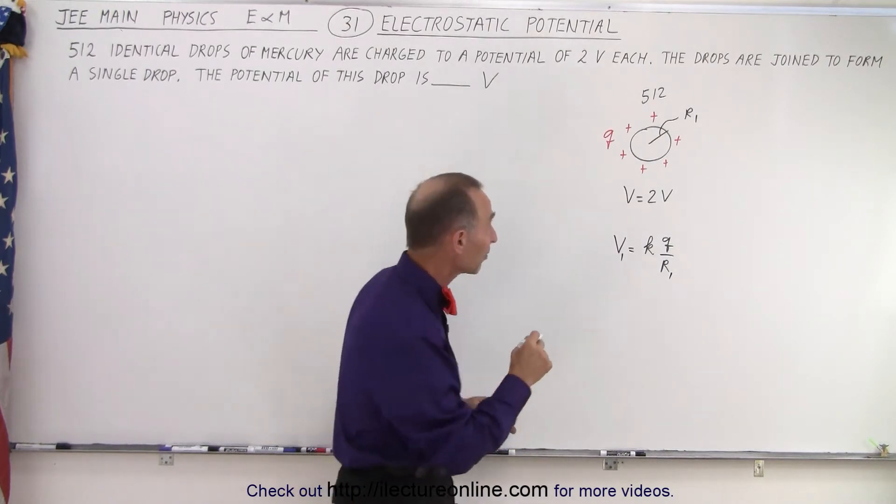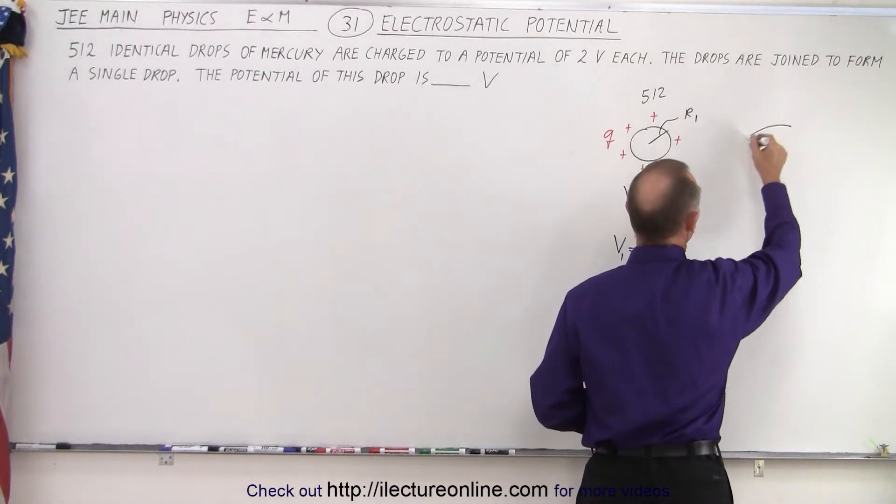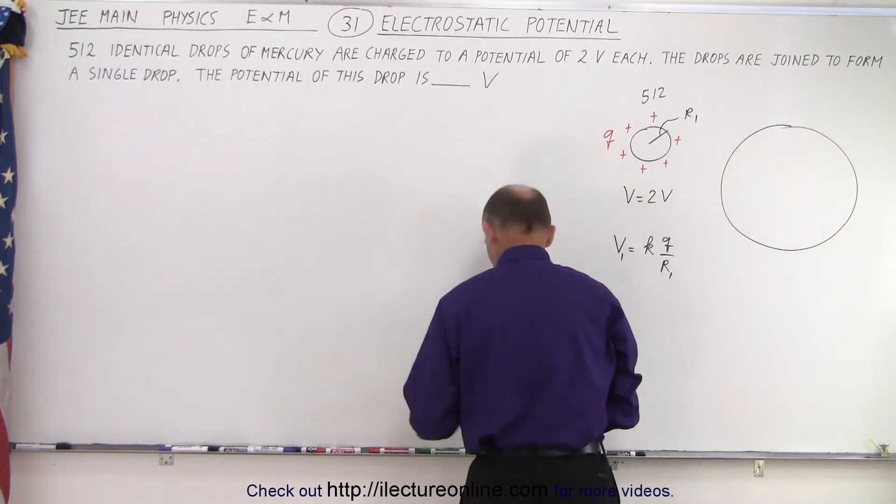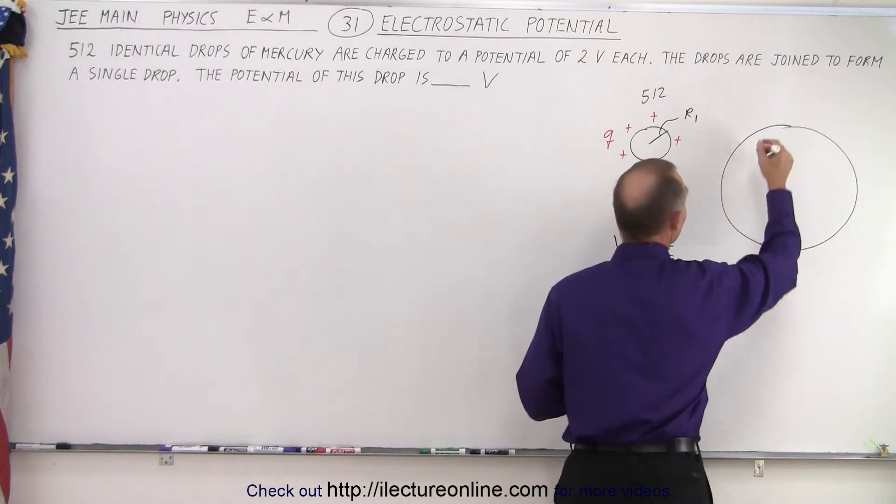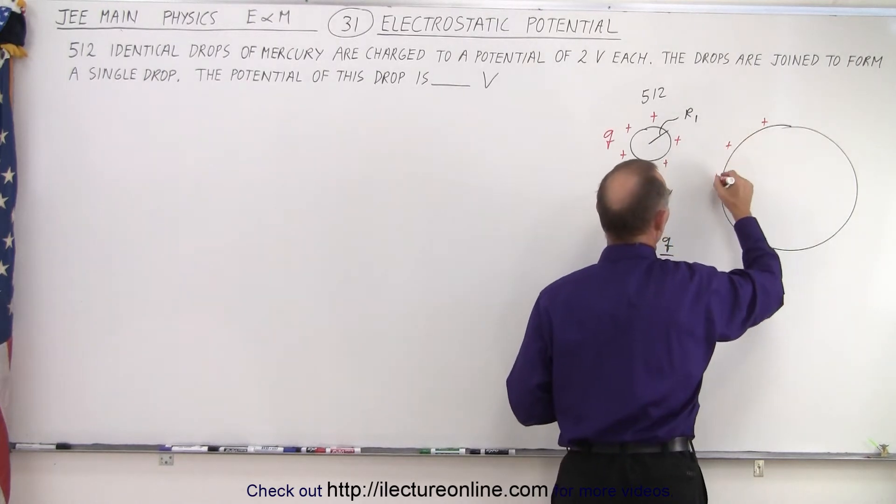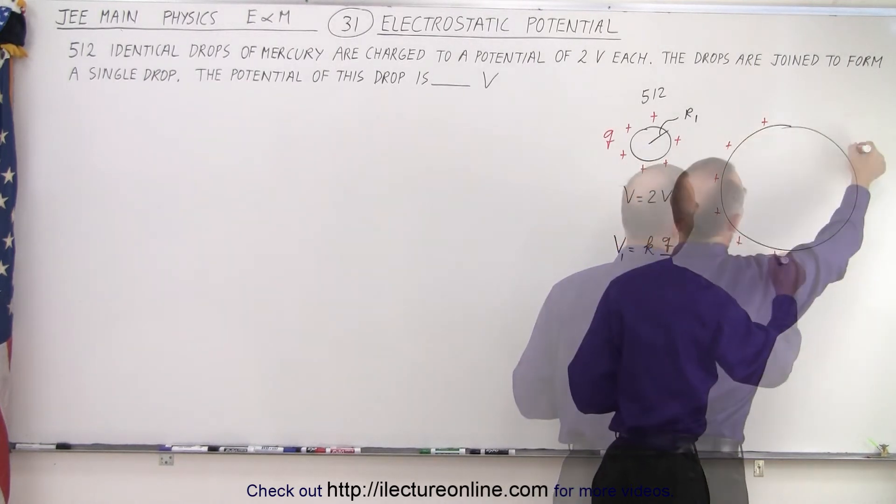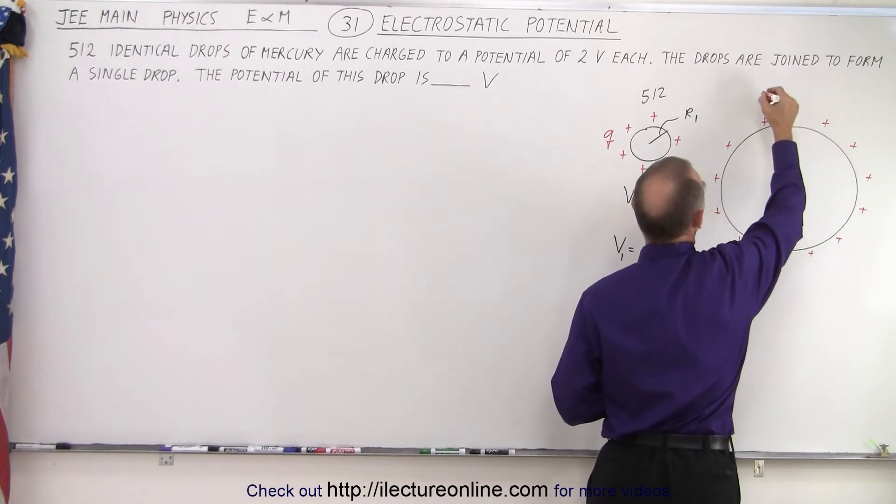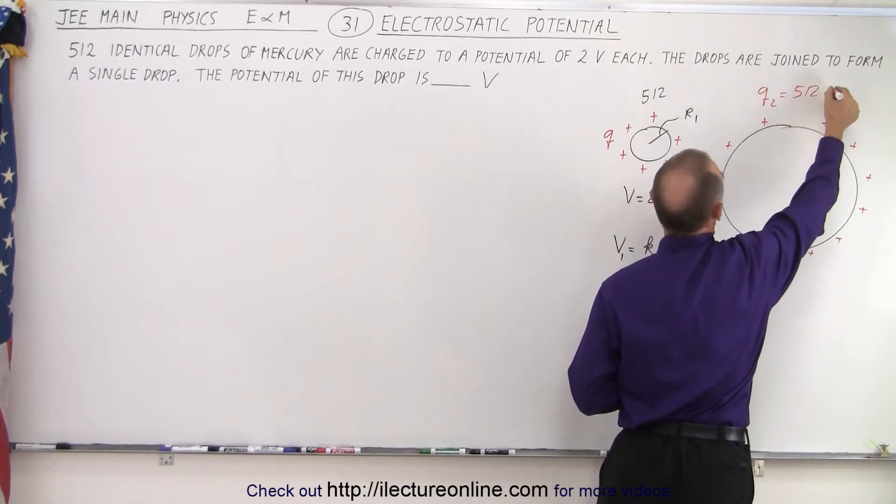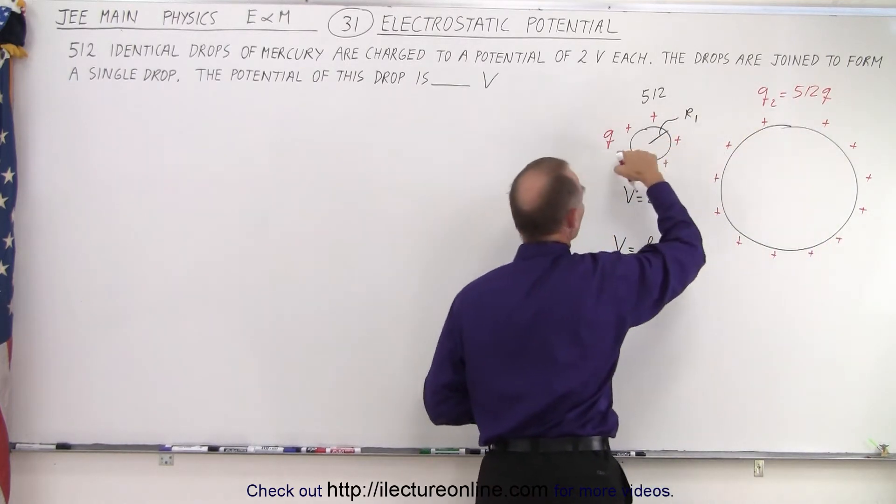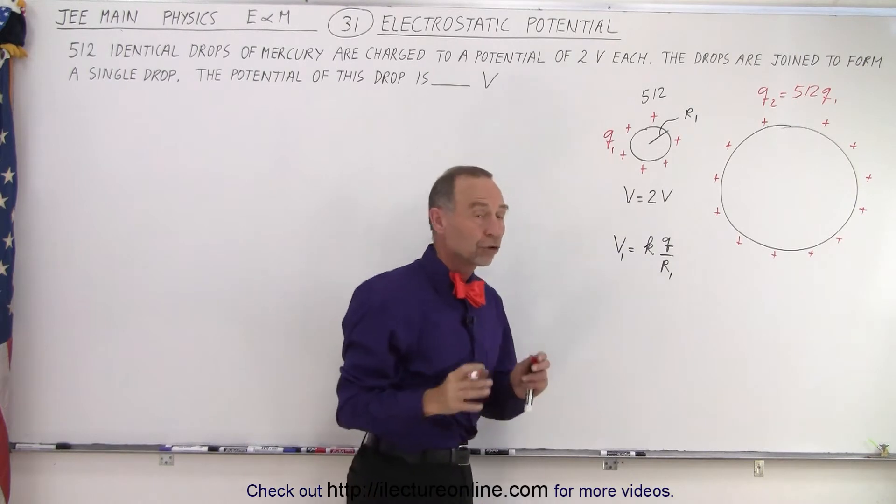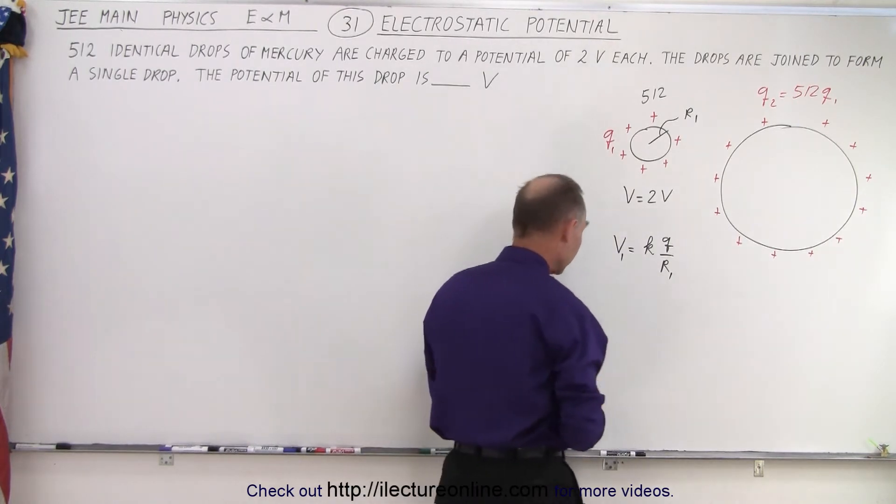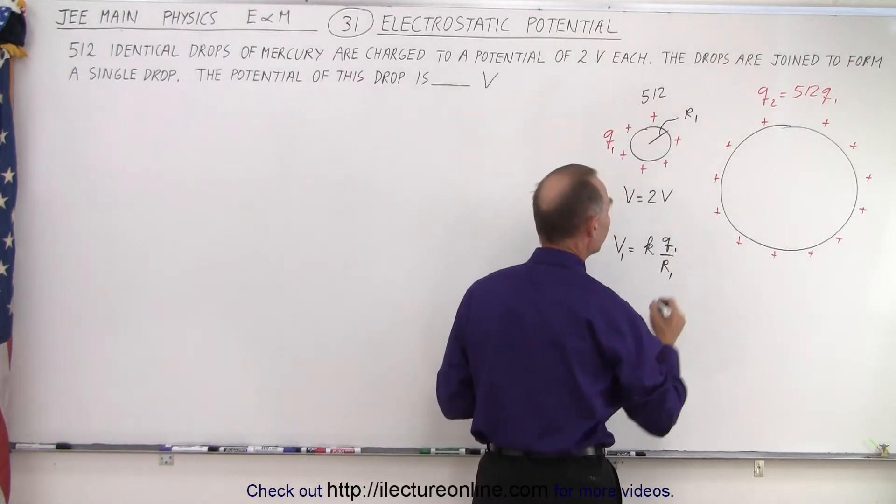So now we're going to take 512 of those and join them together to form a big ball of mercury. And all of those charges of the 512 will end up on the single mercury sphere. Now the total charge, Q2, is going to be 512 Q. So 512 of the charges placed on each of the small mercury spheres. We'll call this Q1.